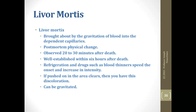Livor mortis exists because blood gravitates into dependent capillaries — it flows where gravity takes it, and it only happens after death. You can usually see it 20 to 30 minutes after a person dies; it's well established within six hours, basically as rigor is developing. Refrigeration and drugs, especially blood thinners, speed the onset and increase intensity. If you press on it, it clears and turns white; if you change the body's angle, the blood gravitates elsewhere.